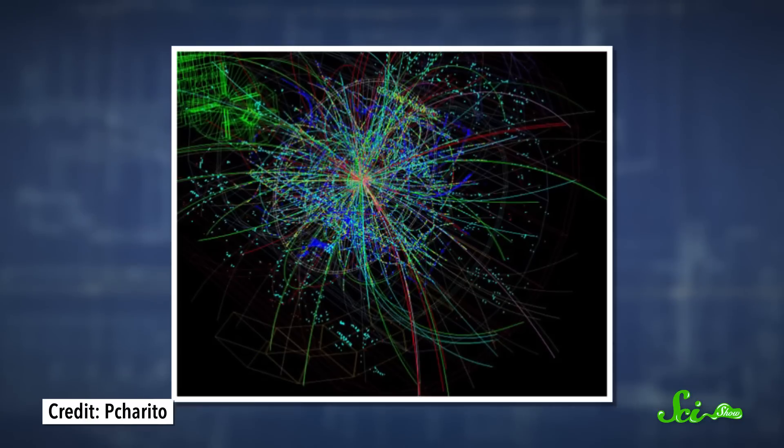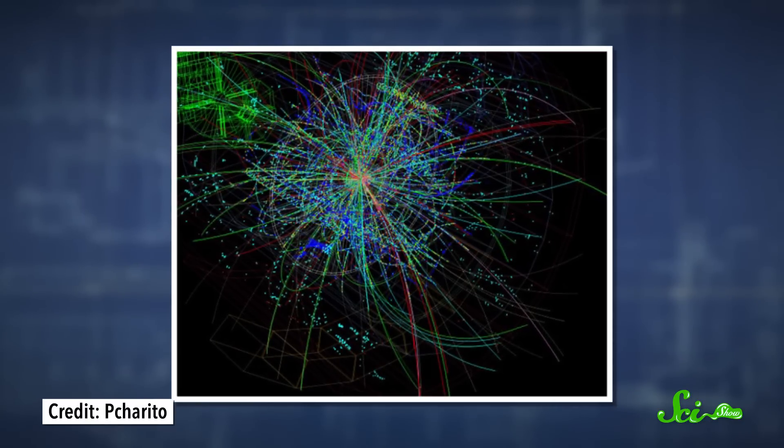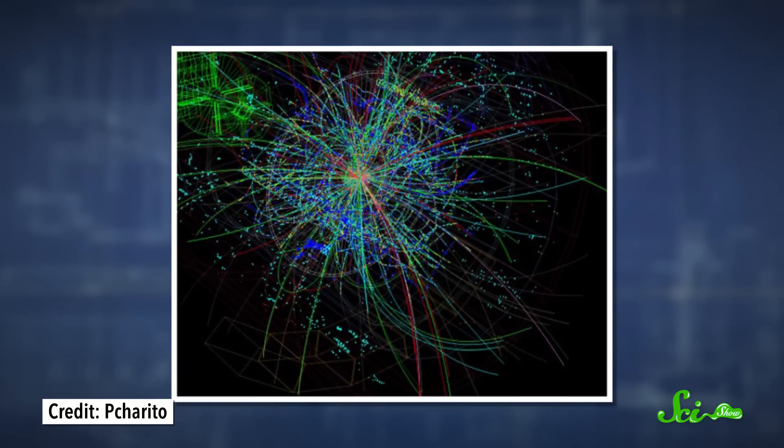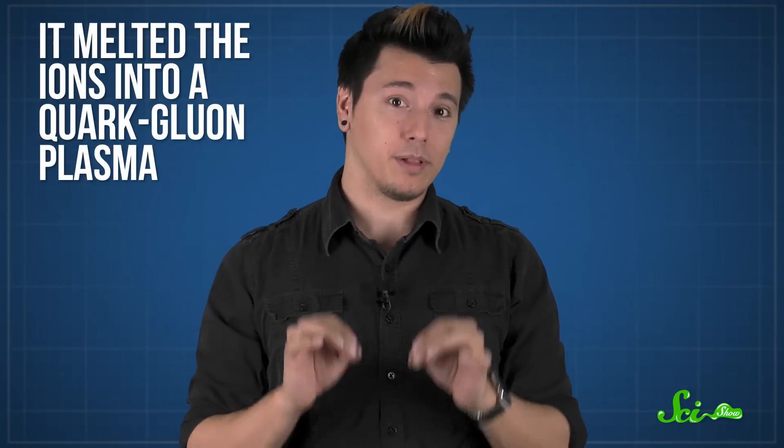In the ALICE experiment, the LHC accelerated heavy lead ions close to the speed of light, giving them enough energy that when they crashed together, they created a lot of pressure and heat. The result was a fireball so hot that for a split second, it melted the ions into a quark-gluon plasma.